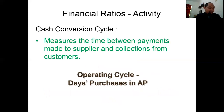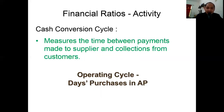Cash conversion cycle measures the time between payments made to a supplier and collections from customers. After calculating your operating cycle, subtract the days purchases in accounts payable. A shorter cash conversion cycle is better, because you have fewer days to wait to receive cash from customers after payment to suppliers — the cash inflow is very fast.